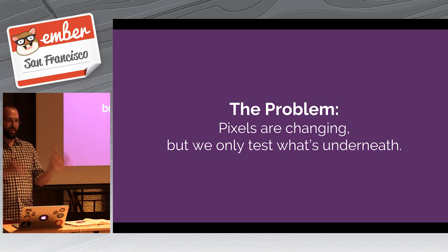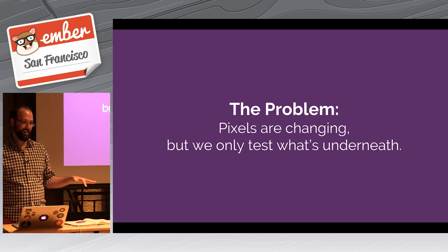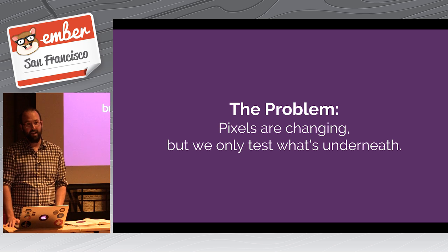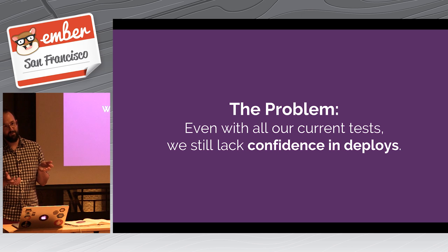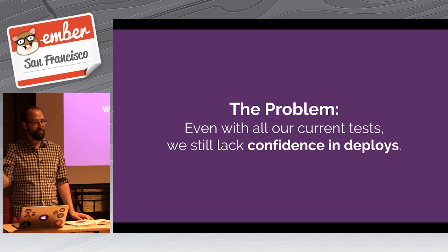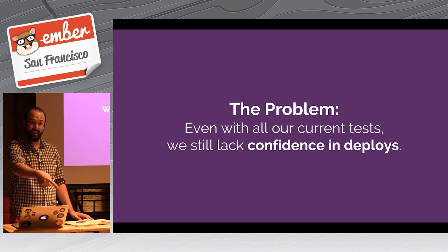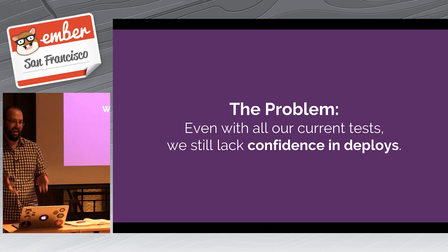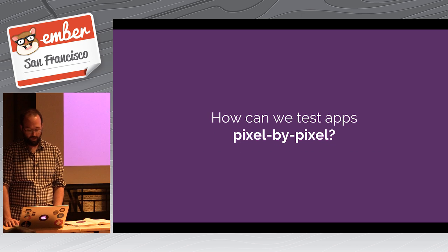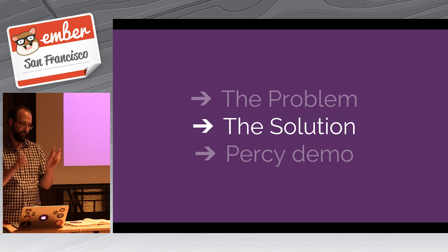The problem fundamentally is that pixels are changing, but we're only testing our abstractions underneath those pixels — we're not actually testing the pixels themselves. Even with all of our current testing strategies and methodologies, we still lack confidence in deploys. You can have a million unit tests for all the data changes you want in the world, but if you move a CSS file, you're going to have to go boot up the app, click through that page, get to that modal dialog, and look at it. So we still lack confidence in the visual side of our deploys. That boils down to: how can we test apps pixel by pixel?